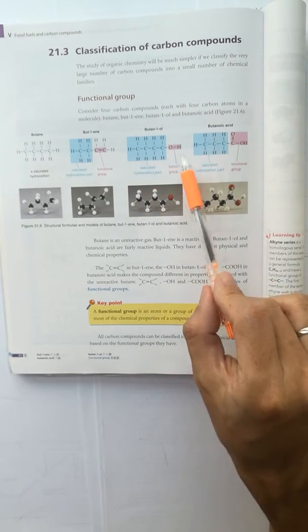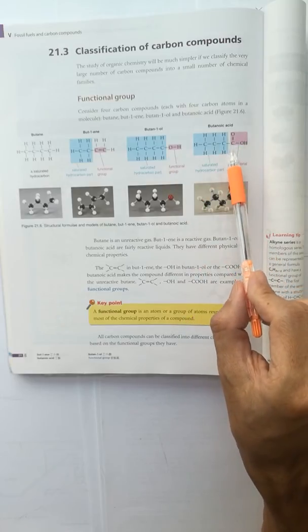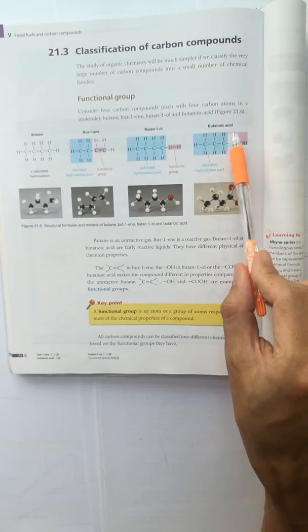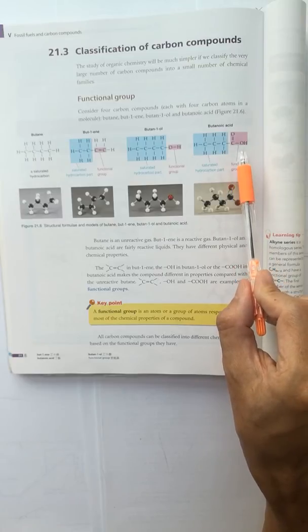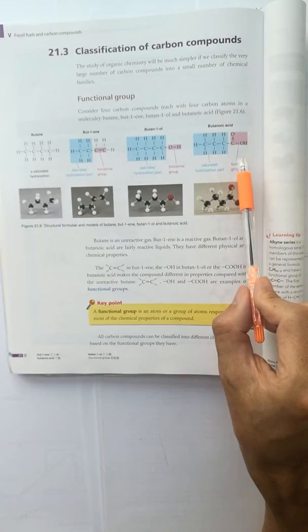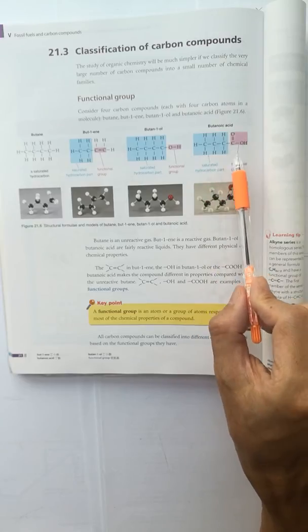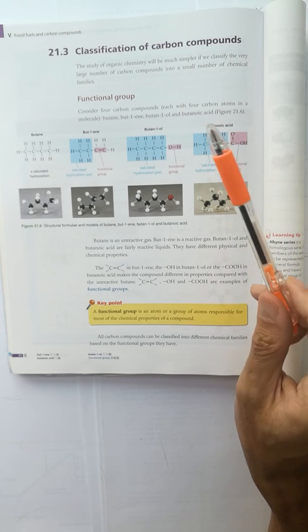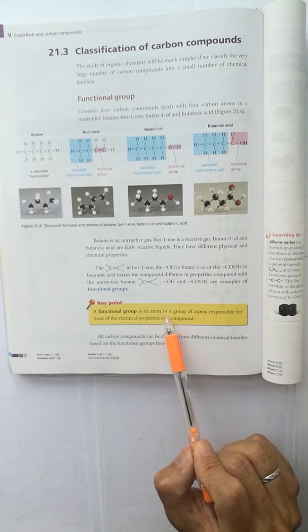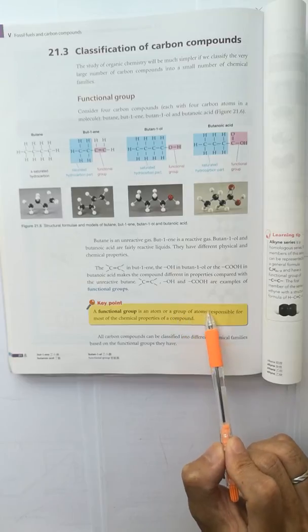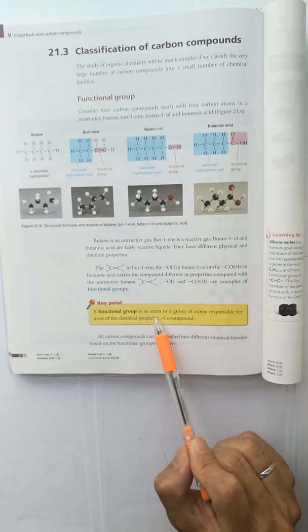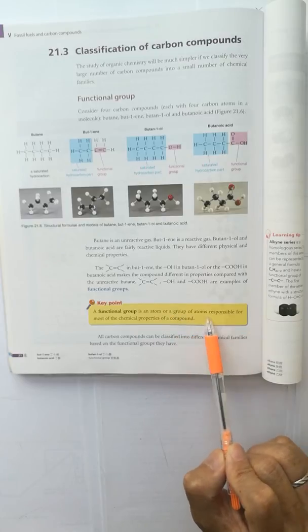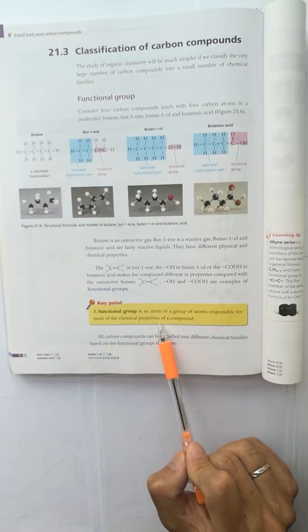Or in other words, if a compound contains the COOH group, it is the acid group. We will predict the compound is acidic when it dissolves in water. So the functional group is a group of atoms or a single atom which is responsible for their chemical properties.